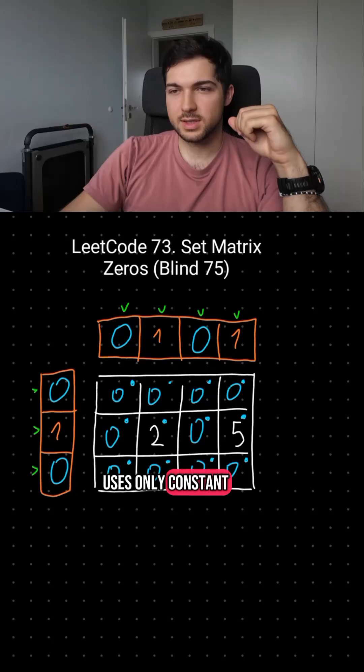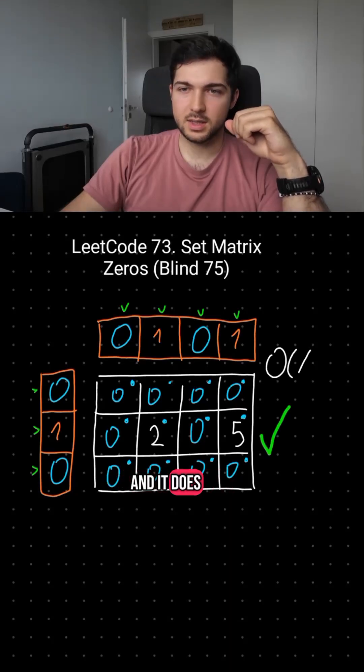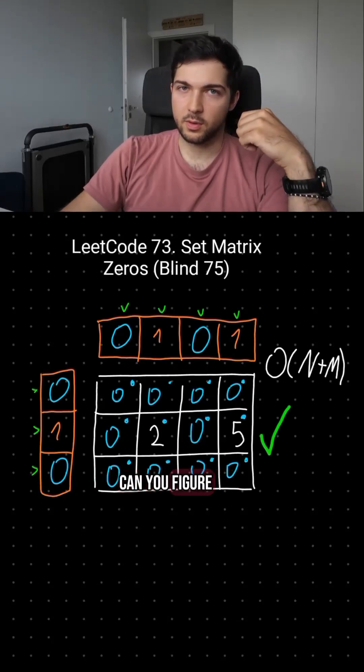There is also a solution that uses only constant extra memory and it does that with only one boolean variable. Can you figure it out?